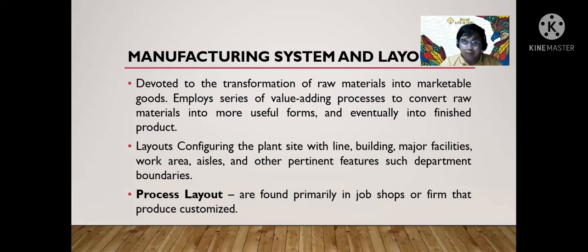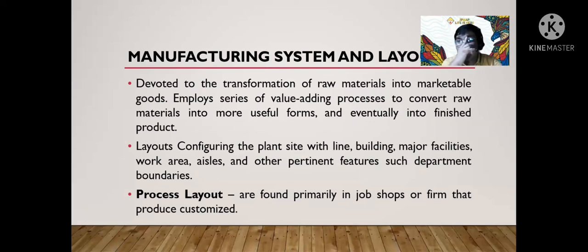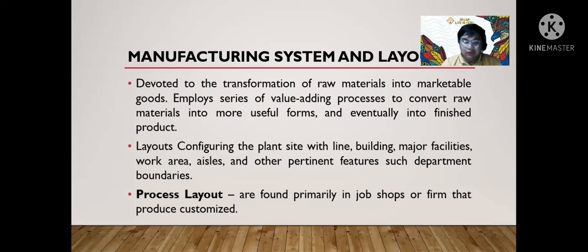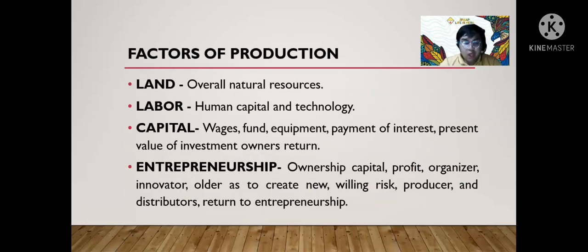Process layouts are found primarily in job shops or firms that produce customized products — for example, if you bought a gift and wanted it wrapped or processed, that is an example of a process layout. The four factors of production are land, labor, capital, and entrepreneurship.